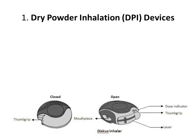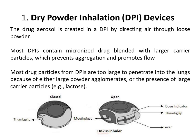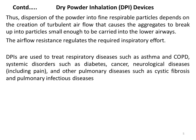Coming to the first part — dry powder inhalation devices. The discus inhaler is most commonly used as a DPI device. The drug aerosol is created in the DPI by directing air through loose powder. Most DPIs contain micronized drug blended with larger carrier particles, generally lactose, which prevents aggregation and promotes flow. Most drug particles from DPI are too large to penetrate into the lungs due to large powder agglomerates or the presence of large carrier particles. Dispersion of powder into fine respirable particles depends on the creation of turbulent airflow that causes aggregates to break up into particles small enough to be carried into the lower airways.